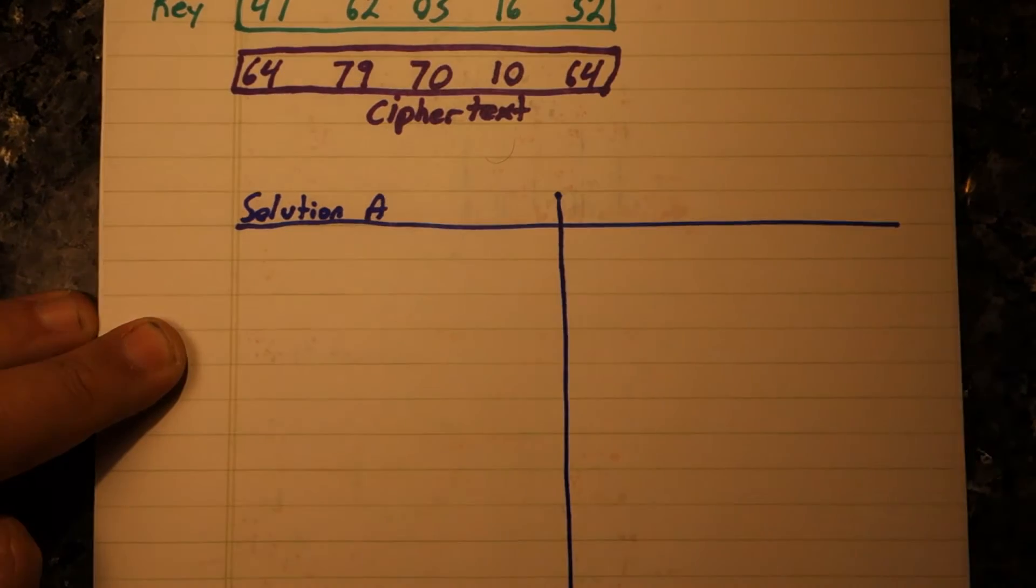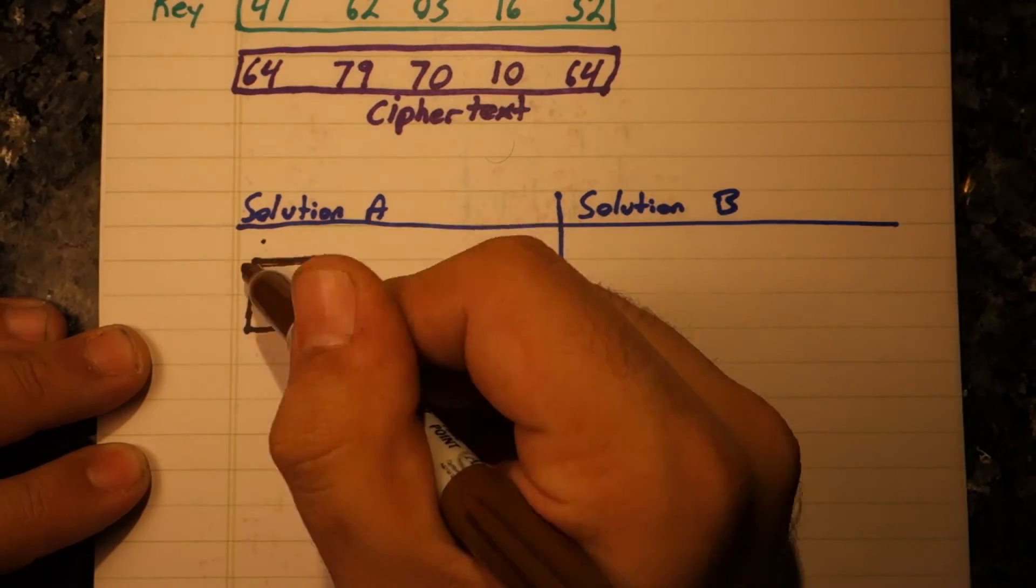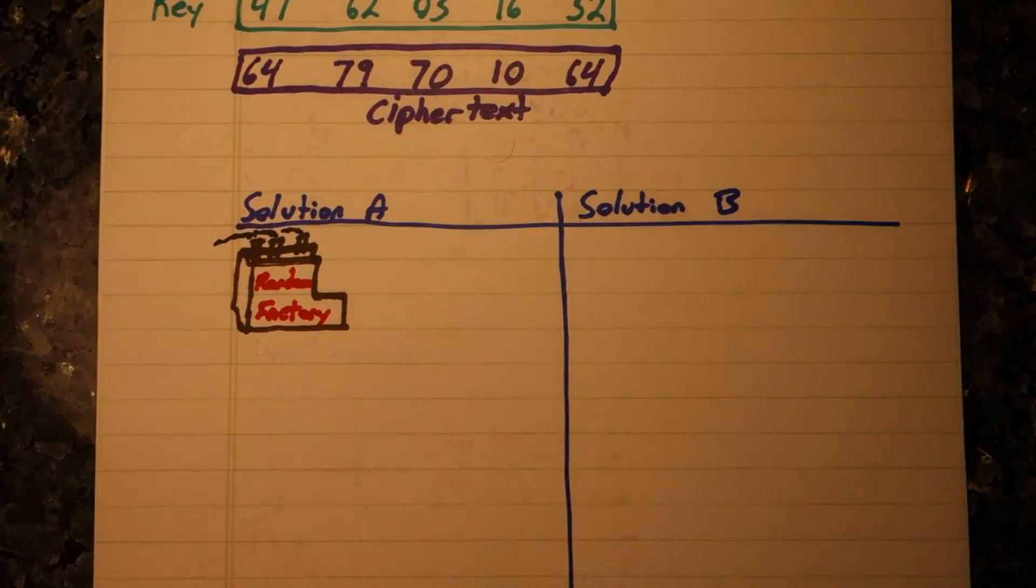Well, as it turns out, there are two types of solutions. We can pre-generate random pads to use and share these pre-generated pads with our friend.